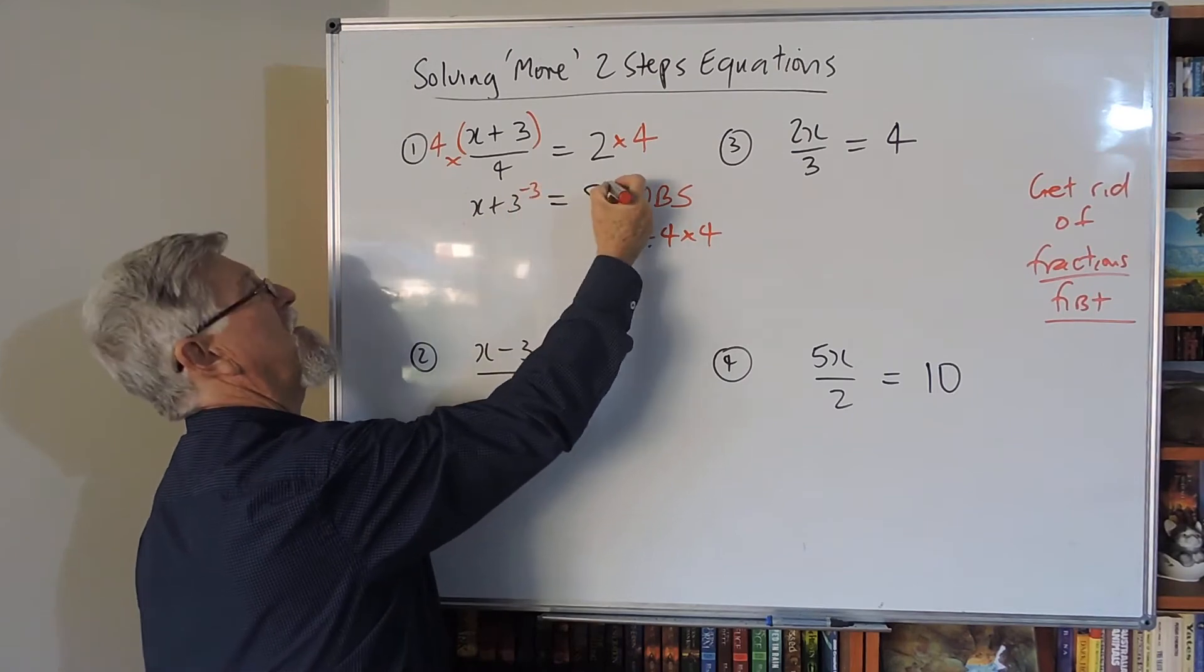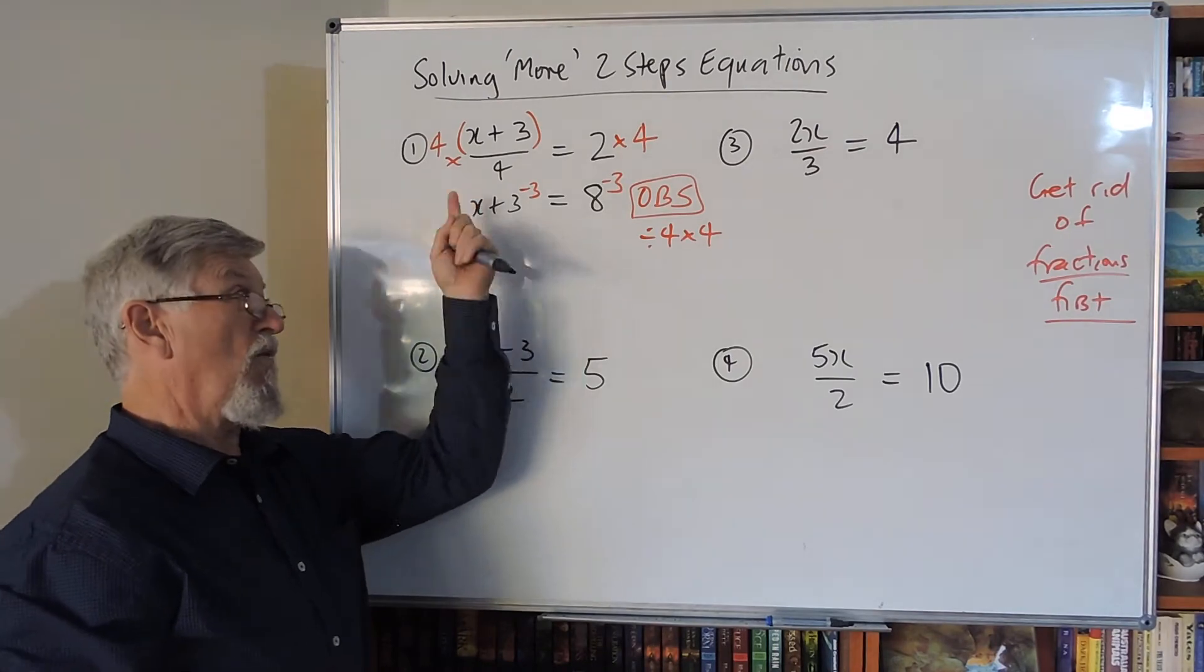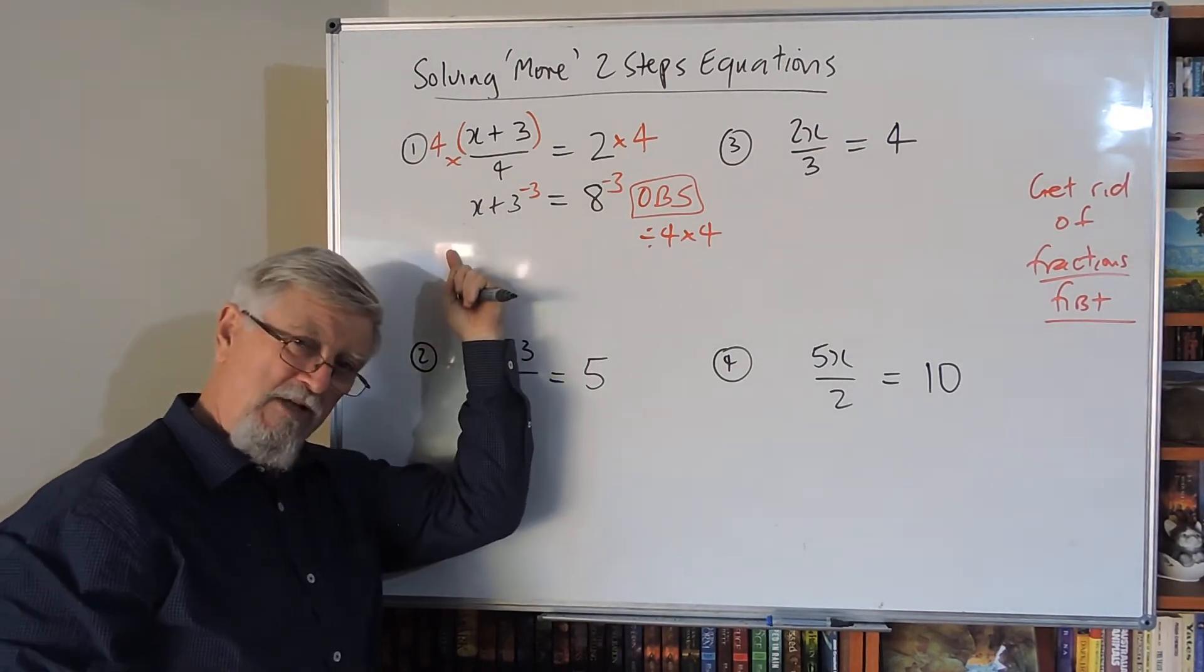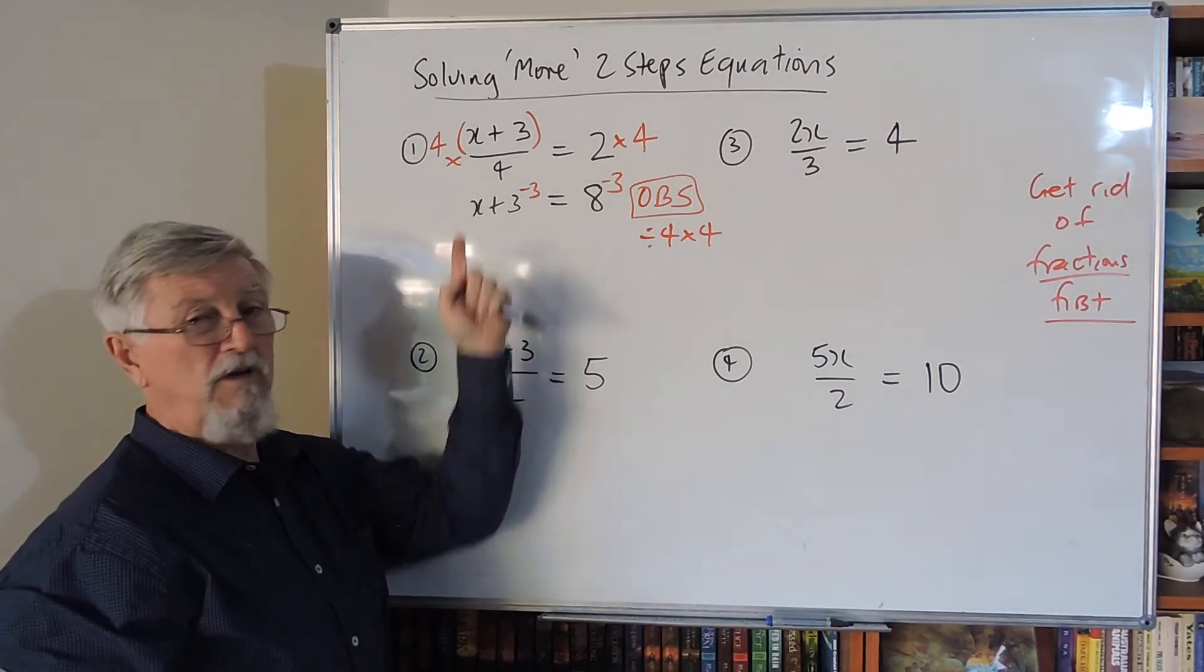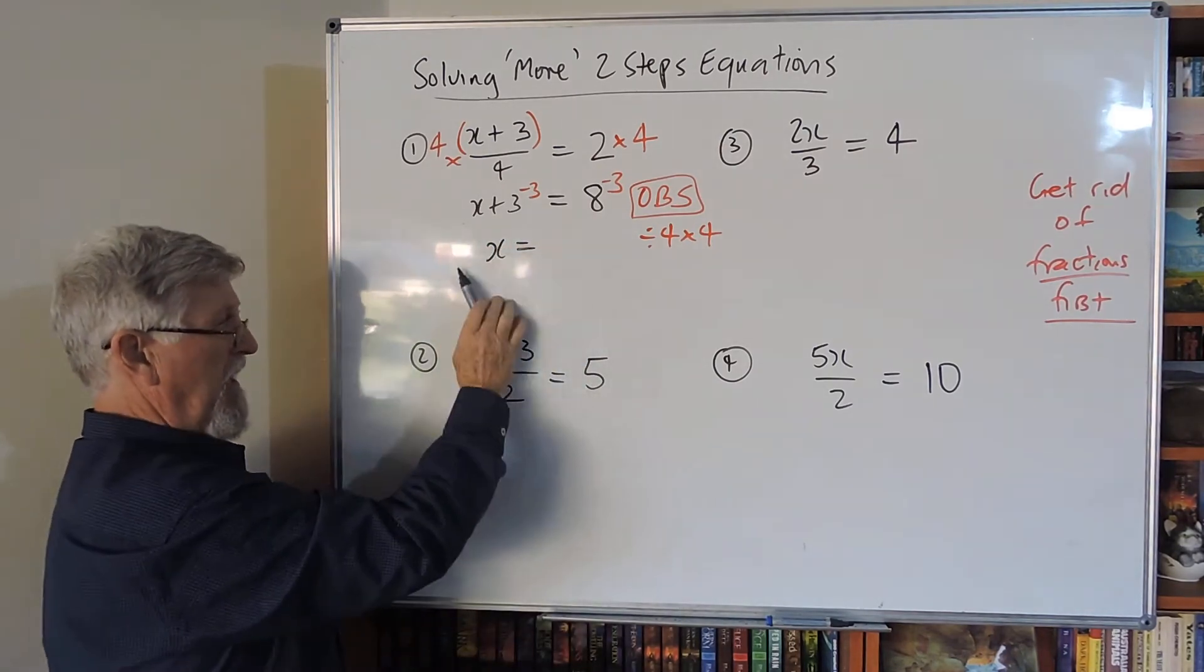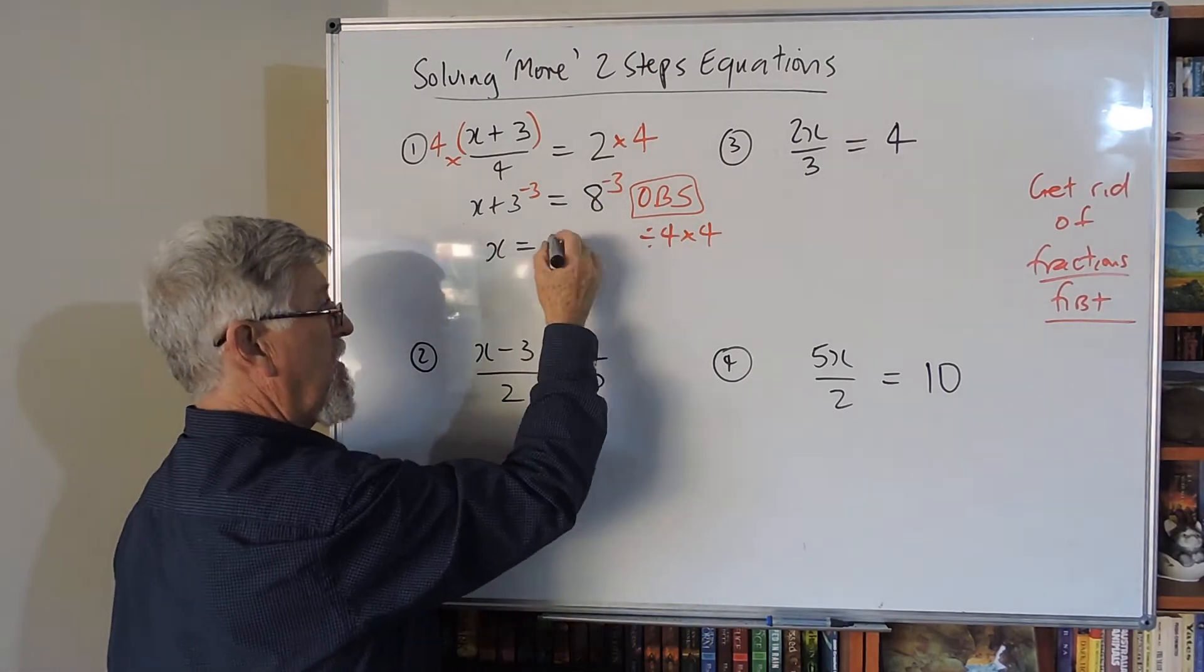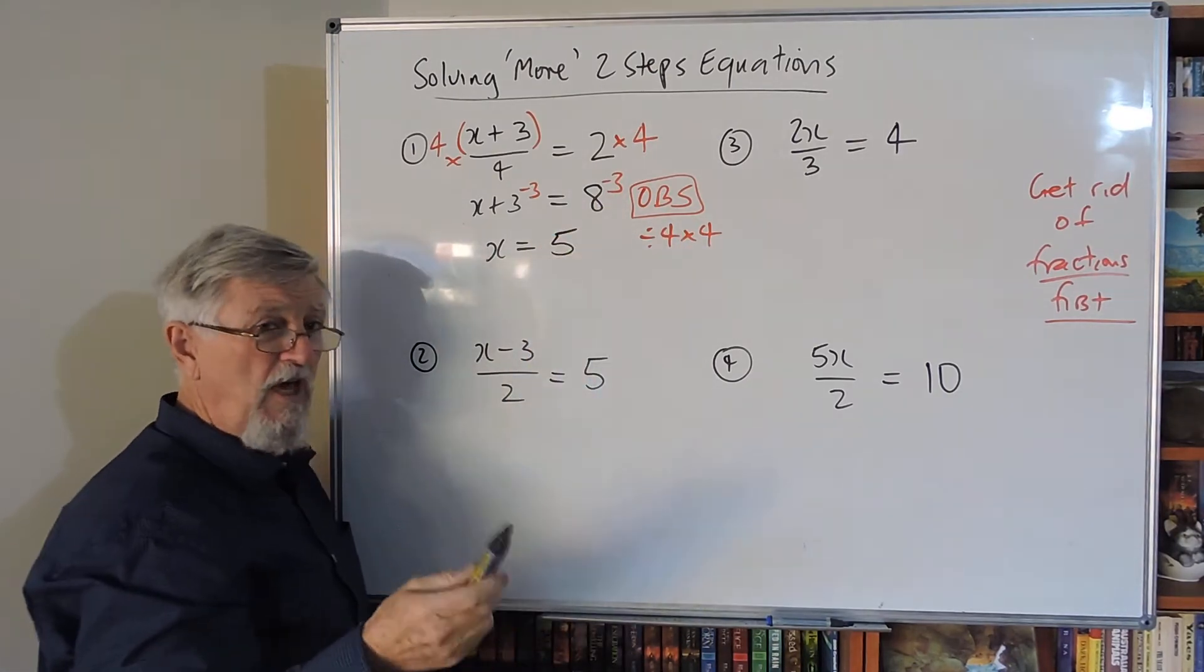Or I can go take three from this side, take three from this side—opposites to both sides. The opposite of a plus three—what controls that three? The plus. So how do I get rid of a plus three? Minus three. And now the equation tells me the answer I want. It says the answer is five, and that's all we're doing with equations—get it to tell us the answer. Eight take three is five.